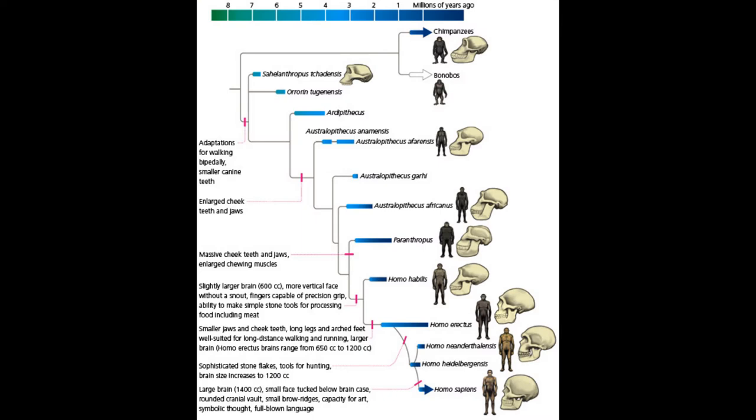I am the analyzer, and the subject we're going to be going over today is a simplified explanation of how the last common ancestor between humans and bonobos became hominids, and eventually Homo, and then Homo sapiens.